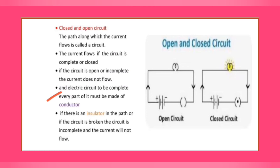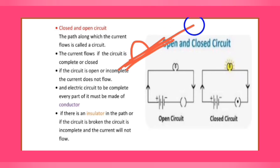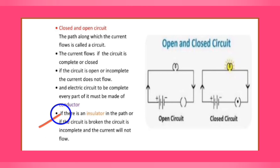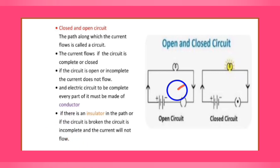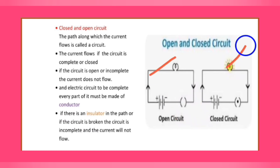For an electric circuit to be complete, every part of it must be made of a conductor only. You cannot have any insulators in between. The outer part of a wire can be an insulator but inside it should be metal. If there is an insulator in the path of the circuit, the circuit is broken and the current will not flow. This is an open circuit; the other is a closed circuit.